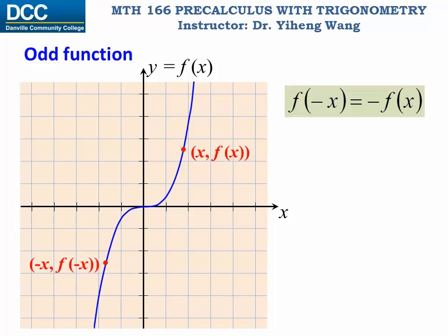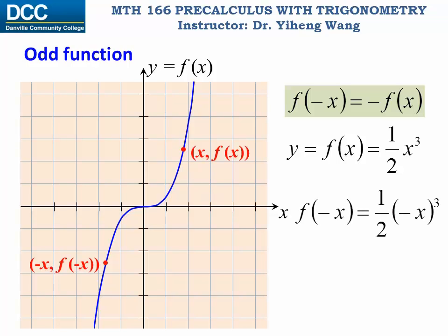For example, for a function y equals f(x), if we want to evaluate this function at negative x, we substitute it in. f(-x) equals one-half times negative x to the third power, and this equals negative one-half x to the third power, which equals negative f(x). And this tells us this function is an odd function.